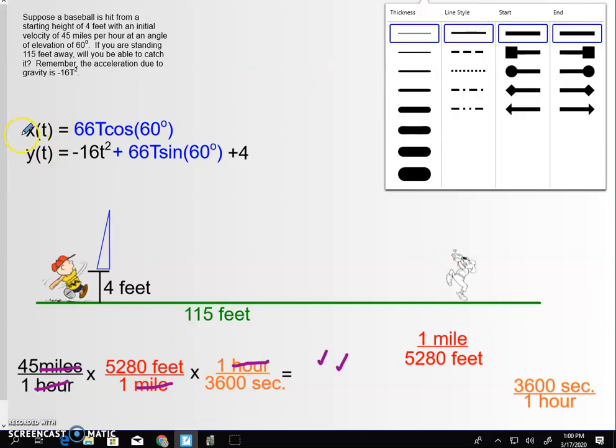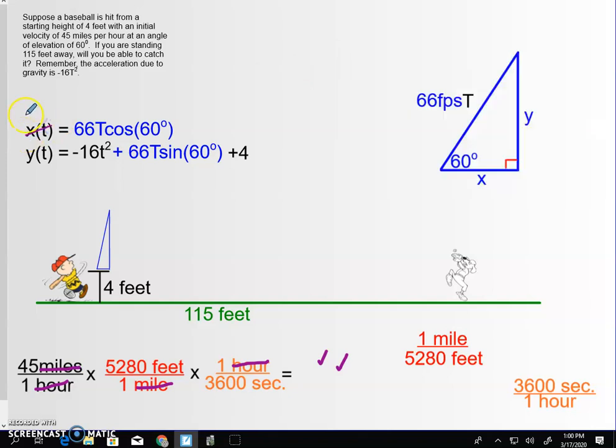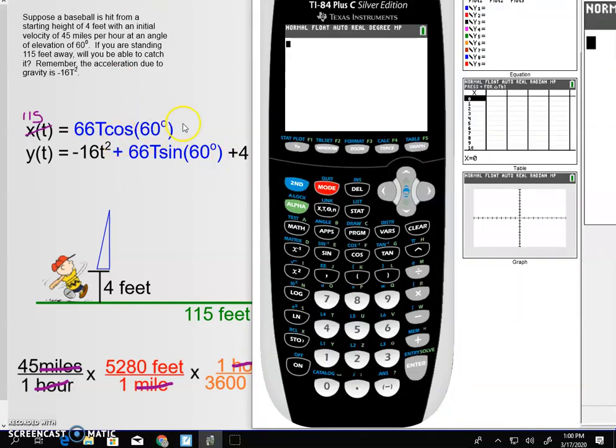So, what I'm going to do is I'm going to come in here and I'm going to say, okay, let's go ahead and let's see. When my x value, my horizontal distance is 115, what is my t? So, going into my calculator here, and you may want to write this down.